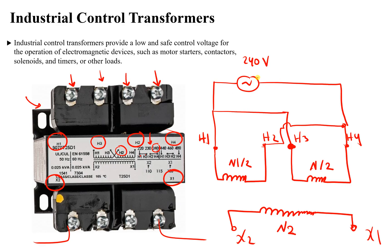You will see that these two coils are in parallel with each other. The voltage across the first coil — from H1 to H2 — is 240 volts. Similarly, the second coil has H3 connected to the first terminal and H4 to the second terminal, so it also has 240 volts. These two coils are in parallel with each other.